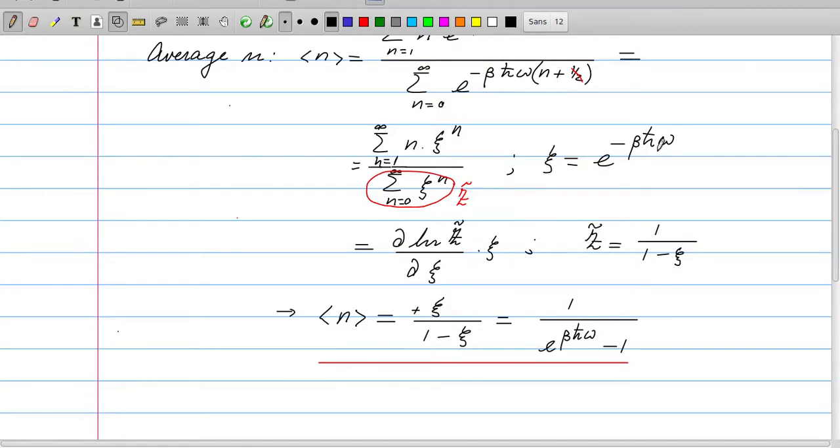And if you plug in the right value for xi, you find immediately this formula, which is recognized as the Bose-Einstein distribution with zero chemical potential. So this is the energy h-bar omega, so we have e to the power beta energy minus one, which is the Bose-Einstein distribution function with mu equals zero.